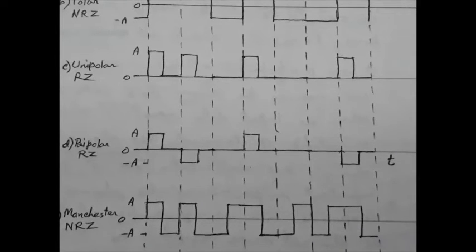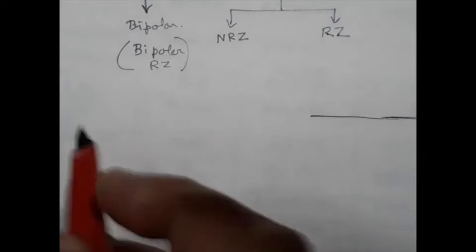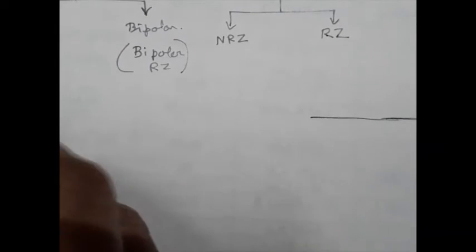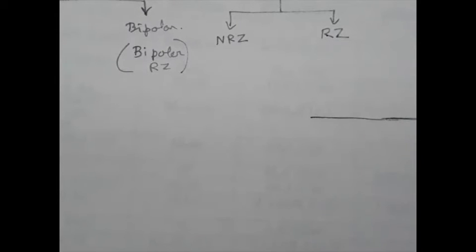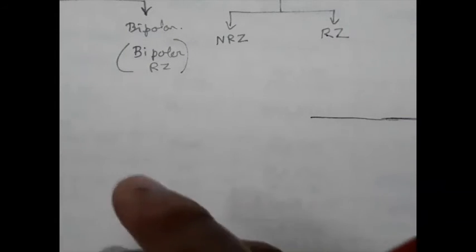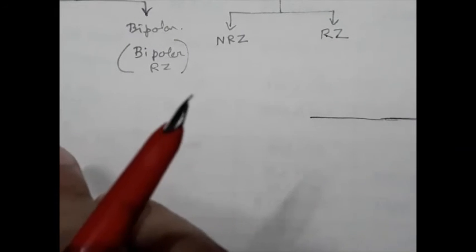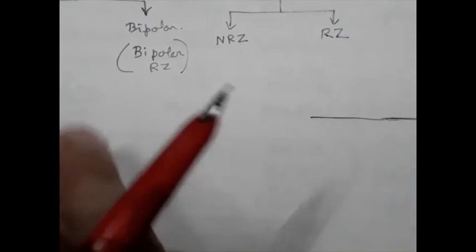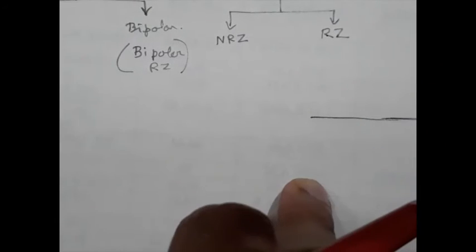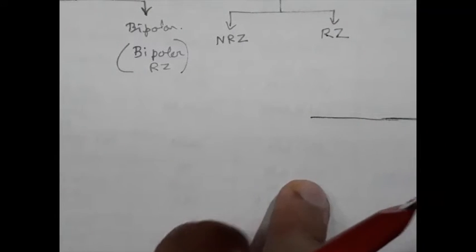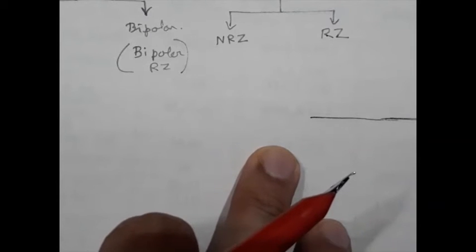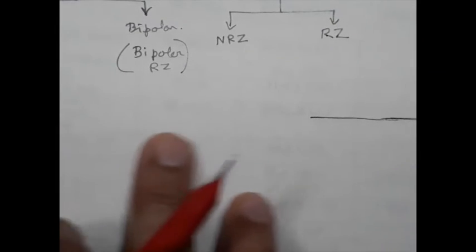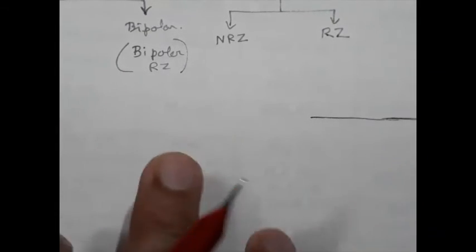The key characteristic of Manchester encoding is that within every bit period, regardless of whether the logic state is one or zero, there will always be a polarity change. In every bit period there is a state change — this is the fundamental characteristic of Manchester encoding.